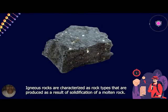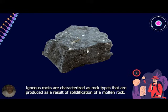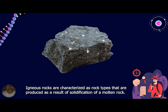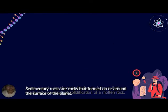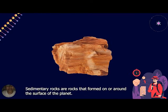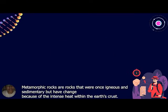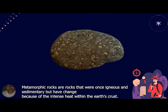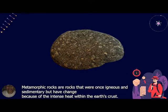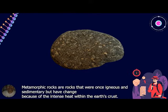First is igneous rocks, characterized as rock types that are produced as a result of solidification of a molten rock. The next is sedimentary rocks, which are rocks formed on or around the surface of the planet. And lastly, metamorphic rocks — these are rocks that were once igneous and sedimentary but have changed because of the intense heat within the Earth's crust.